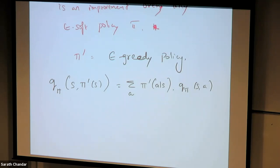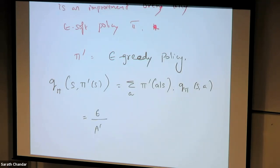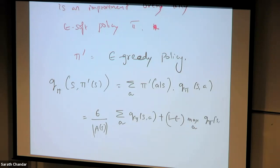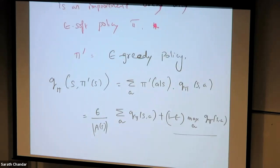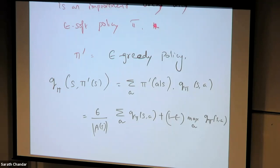Since this is a stochastic policy we have to consider all possible actions. For the argmax action the probability is one minus epsilon plus epsilon divided by the cardinality of A; for all other actions it is epsilon divided by the cardinality of A. Expanding the summation, this becomes (epsilon / |A|) times the summation over a of q_pi(s, a) plus (1 - epsilon) times the q-value of the maximum action. Note that the max action appears once with probability (1 - epsilon) and also within the first sum.